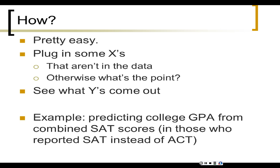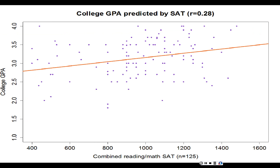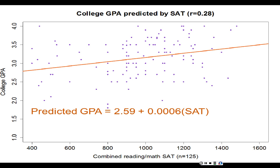Here's an example from the support data: predicting college GPA from combined SAT scores. Not everybody took the SAT — only about 125 people out of 400-odd have valid SAT data; most reported ACT. So let's look at the people who reported SAT scores. This is the regression line and scatter plot of the combined reading and math scores — combining the 200-to-800 possible in reading with the 200-to-800 possible in math, giving a total sum score of between 400 and 1600.